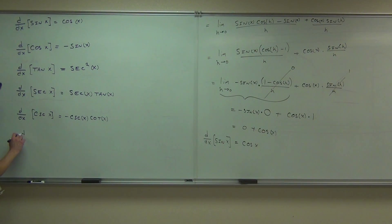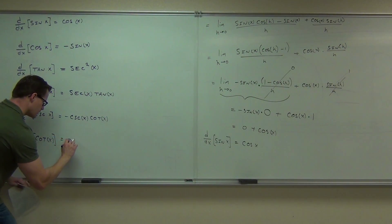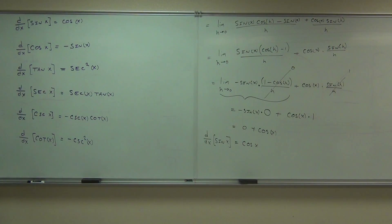Last one. What did I miss? Cotangent. Make sure I'm right. Yeah. Negative cosecant squared X.